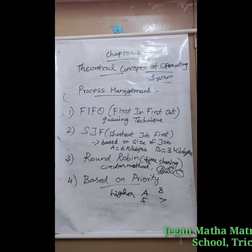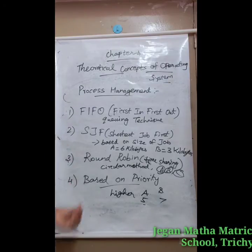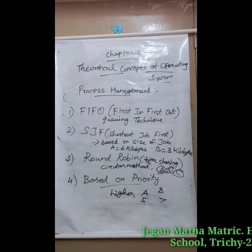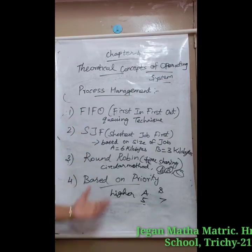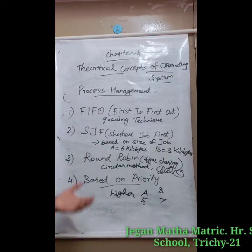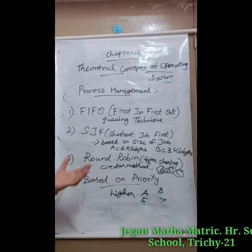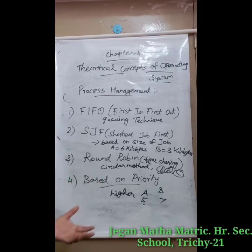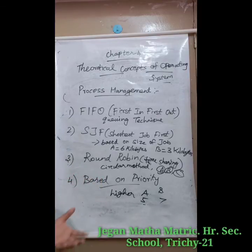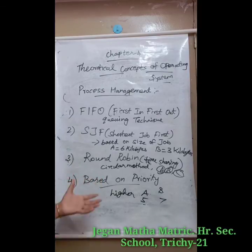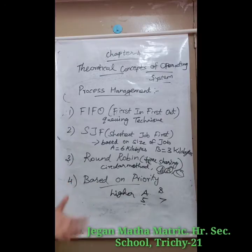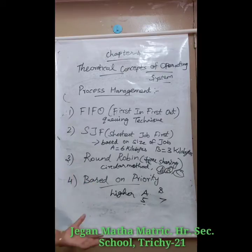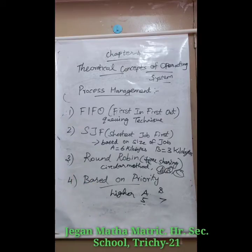These are all the algorithms used in process management. First In First Out is a queuing technique. SJF is Shortest Job First. Round Robin follows a circular method. And based on Priority, whichever job has the highest priority is processed first.